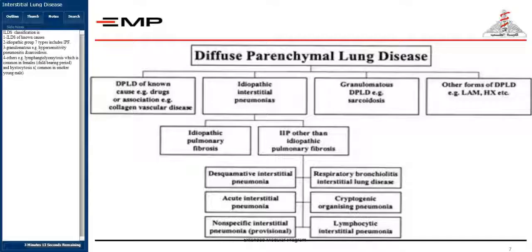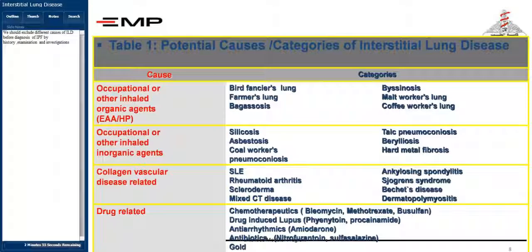The spectrum of DPLD: ILD classification includes — one, ILDs of known causes; two, idiopathic group with seven types including IPF; three, granulomatous, for example hypersensitivity pneumonitis and sarcoidosis; four, others, for example lymphangioleiomyomatosis which is common in females of childbearing age, and histiocytosis X, common in smoker young males.